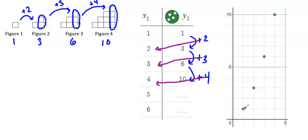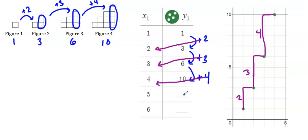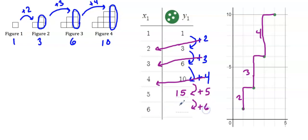I can also see this is not linear from my graph — I can see how it's curving. It goes up two, then up three over one, then up four over one. If I continue the pattern to where x is five, I'll add five to my previous number to get 15. To get to x equals six, I'll need to add six, giving me 21.